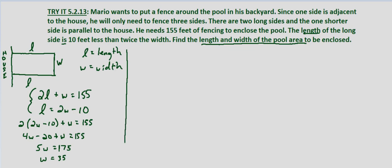So now with our second part we substitute W equals 35. So we'll put that into both of our equations. 2L plus 35 equals 155. Subtract 35 from both sides we get 2L equals 120. Divide both sides by 2 and we get L equals 60 feet.